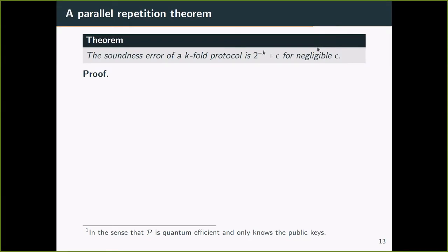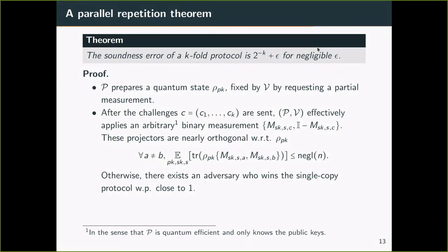In this work, we show that parallel repetition works for the verification protocol. The soundness error of a k-copy protocol is negligible to the negative k. The idea is as follows. In the parallel-repeated protocol, the prover prepares the quantum state rho, which is fixed by the verifier by requesting a measurement on the image registers. After receiving k challenge coins, we characterize the prover and the verifier's behavior as a binary measurement that depends on the circuit key, the sampled local term, and the challenge coins.